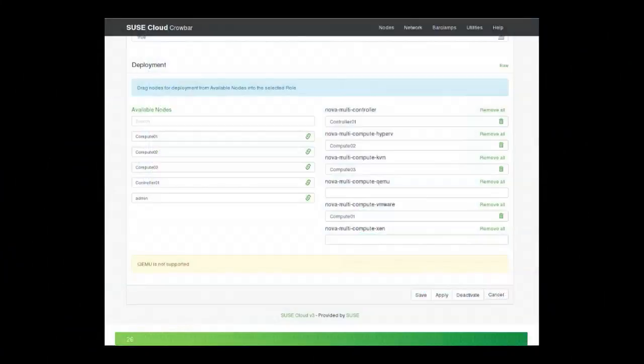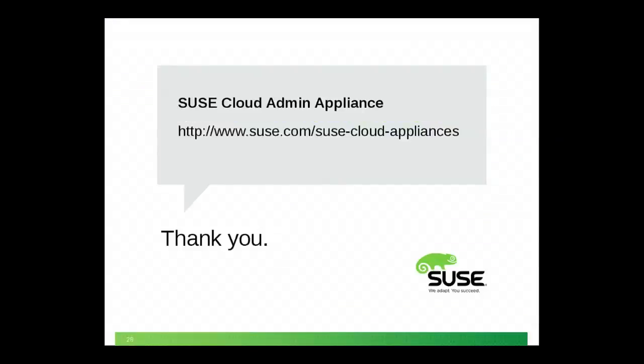Any other questions? SUSE is providing the easy button. It's really quick and easy to do this using Crowbar and SUSE Cloud. The SUSE Cloud admin appliance is available — this admin appliance loads up Crowbar and has everything you need to deploy an entire OpenStack Cloud based on Havana. Go download it — it's really quick and easy. You'll have a cloud up and running in about a half an hour.